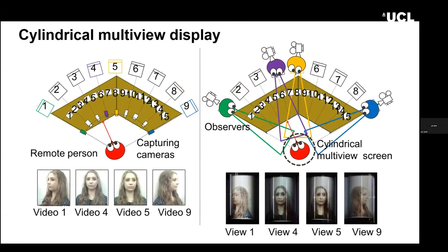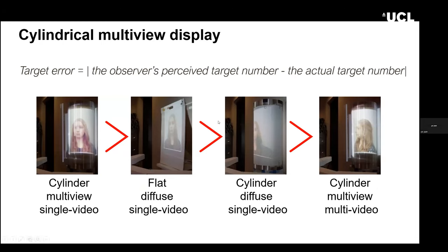The cylindrical display is similar to the spherical display but allows multiple users to simultaneously see the correct view. We use rear cameras to capture and project onto the cylindrical display. This display uses special materials similar to lenticular lenses placed vertically, so each projected image has a very small viewing zone, allowing people to see different views from different angles. We did a user study demonstrating that the spherical display better preserves gaze position for the remote person.